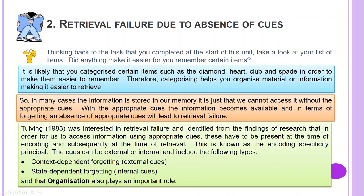Retrieval Failure Due to Absence of Cues. Thinking back to the task you completed at the start of this unit, take a look at your list of items. Did anything make it easier to remember certain items? It is likely that you categorised items such as diamond, heart, club, and spade to make them easier to remember. Categorising helps you organise material, making it easier to retrieve. In many cases the information is stored in our memory; it is just that we cannot access it without the appropriate cues. With appropriate cues the information becomes available, and an absence of appropriate cues will lead to retrieval failure.